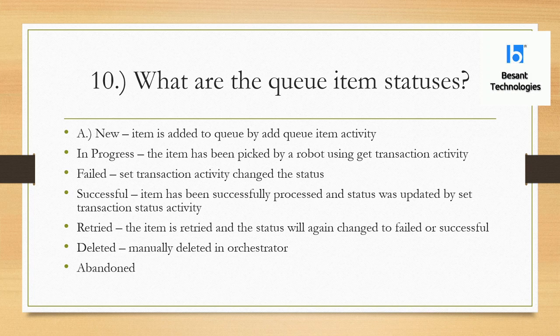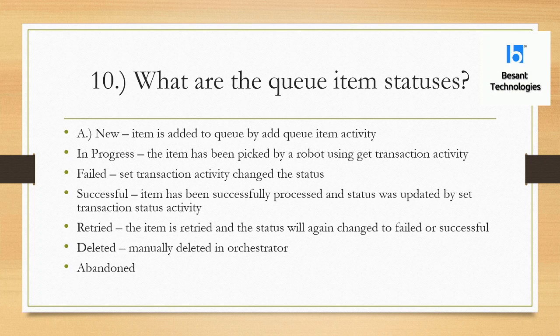If you specify retry attempts in the config file, there is no need to specify them in the queue settings. When an item is being retried, its status will show as Retried, and after retrying it will change to either Failed or Successful. Deleted means if you have duplicate items in the queue and want to remove them so no bot picks them up, you select those items, right-click, and delete them. Abandoned means if an item's status is In Progress and it is not updated within 24 hours, the status will automatically change to Abandoned.